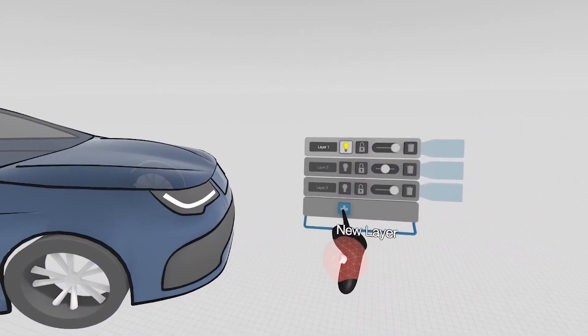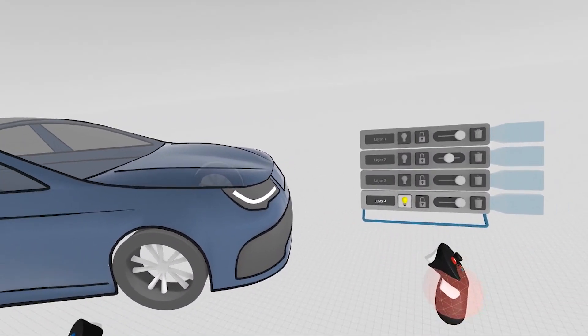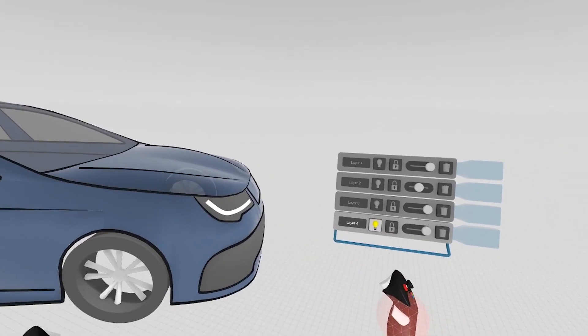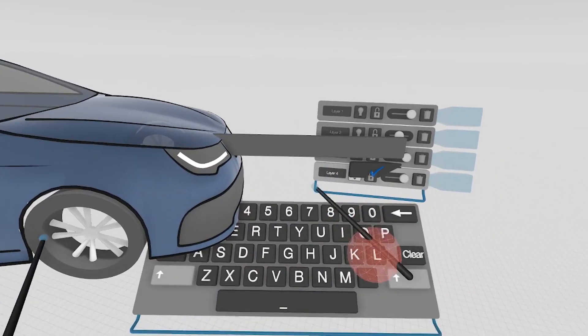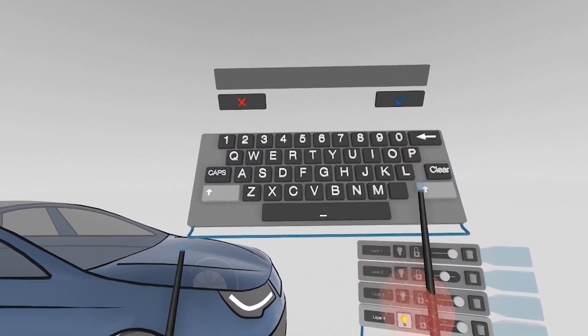And you can add layers by clicking the plus sign. Once you've added a layer, that layer becomes active. You can change the name of that layer by clicking on the tag, and we'll label this one.